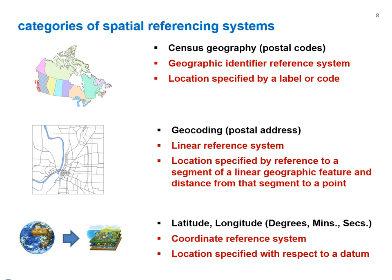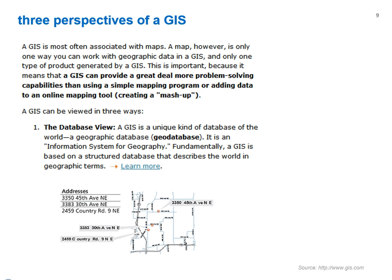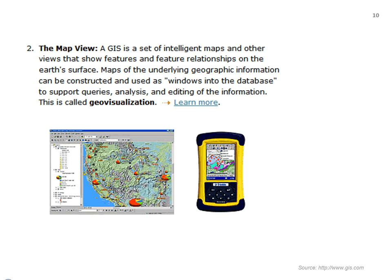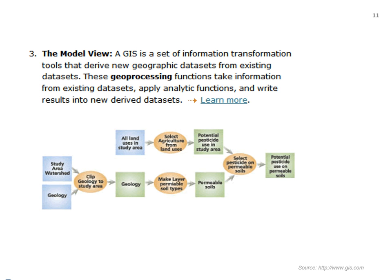In GIS analysis, the latitude and longitude, or coordinate reference system, is important. In the coordinate reference system, location is determined based on an assumed reference shape of the earth that serves as a reference, or datum. We can think of a GIS from three perspectives or functionalities: first, the GIS can be viewed as a geographic database — the geodatabase perspective; second, as a mapping system — the geovisualization perspective; and third, as a tool to transform geographic data using mathematical and statistical processes — the geoprocessing perspective.